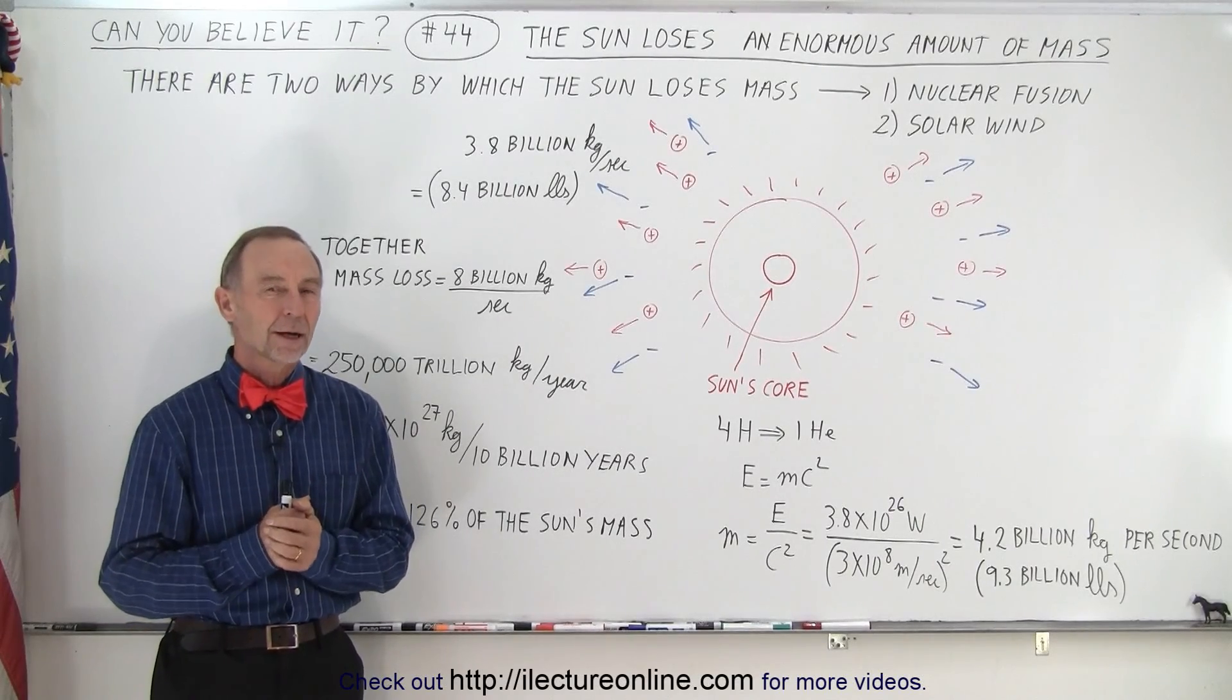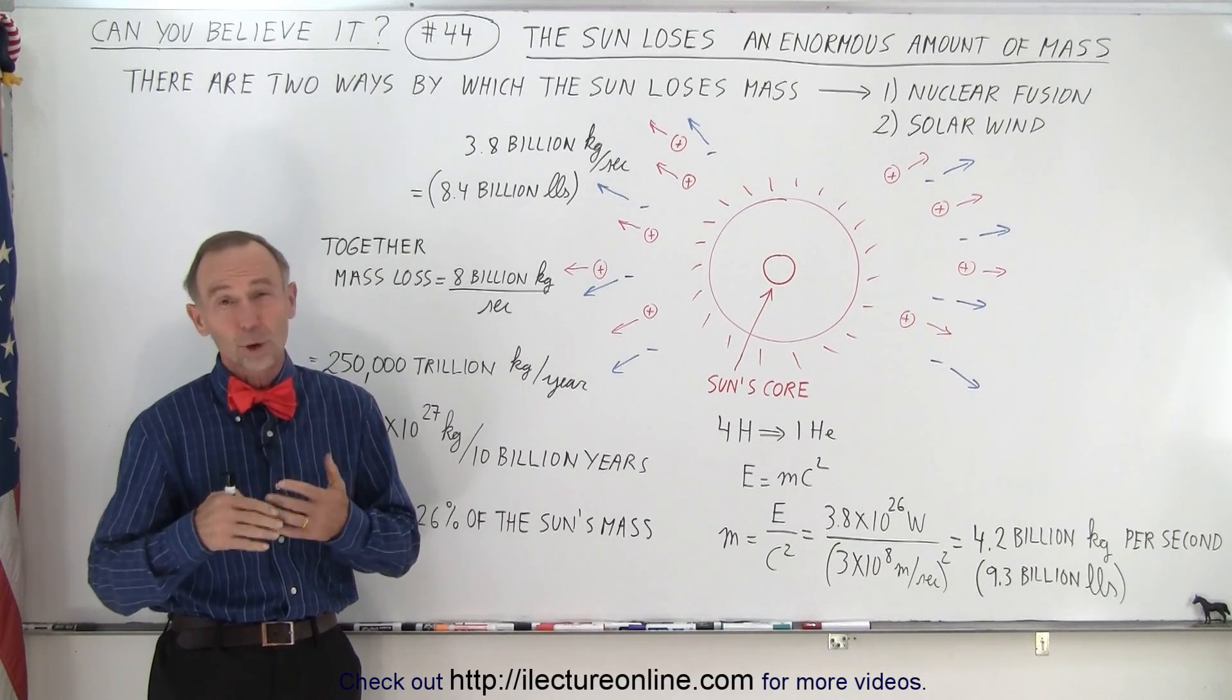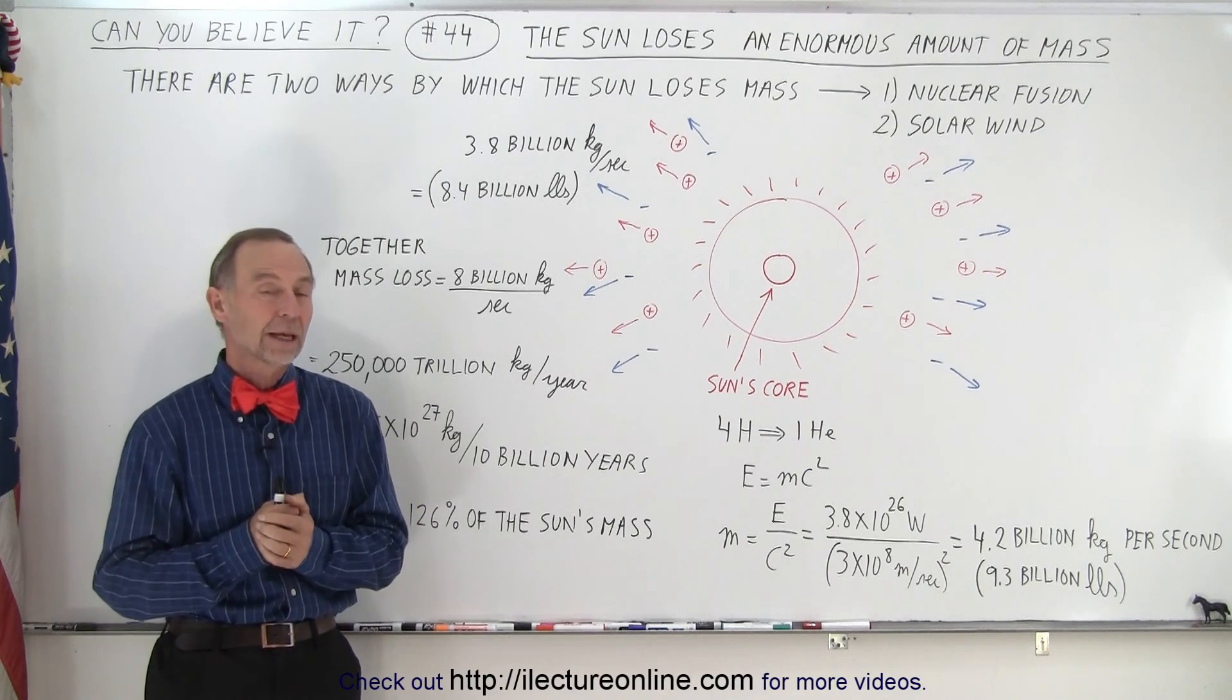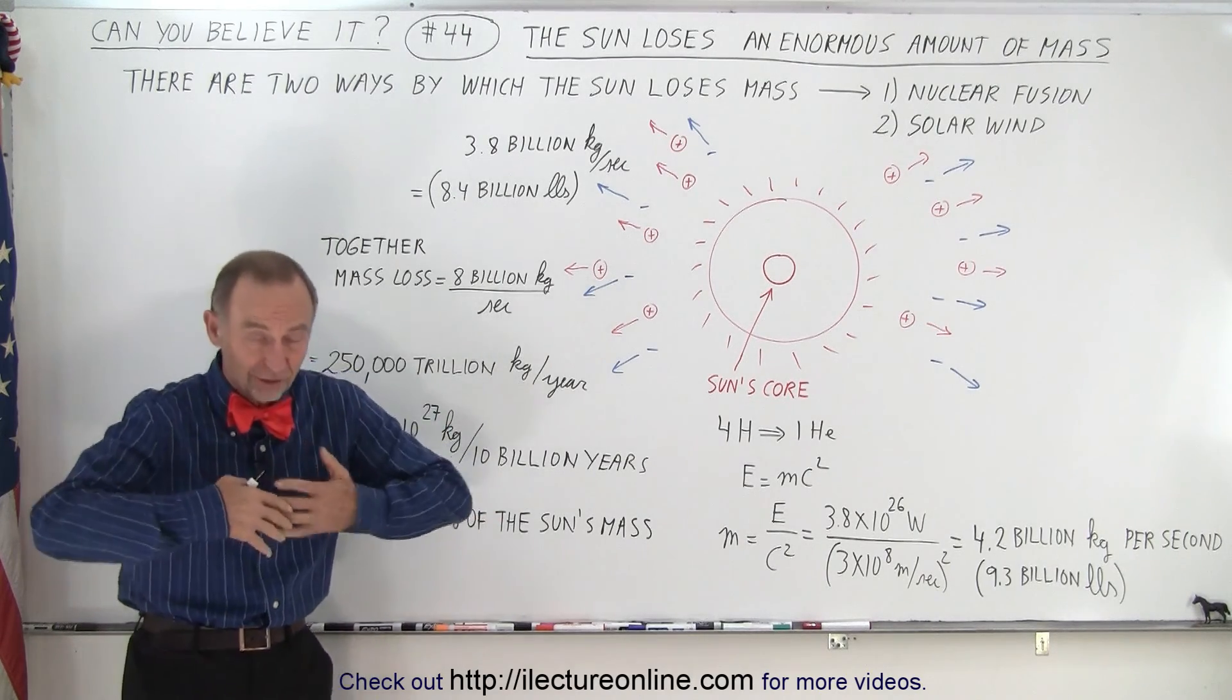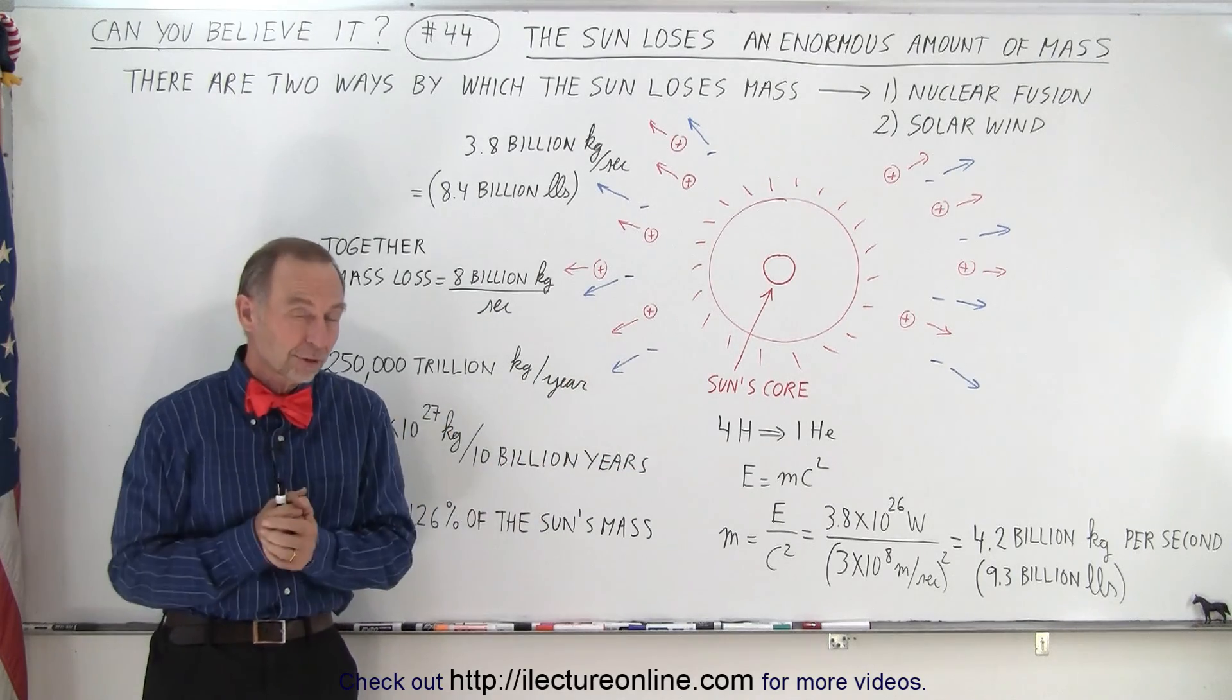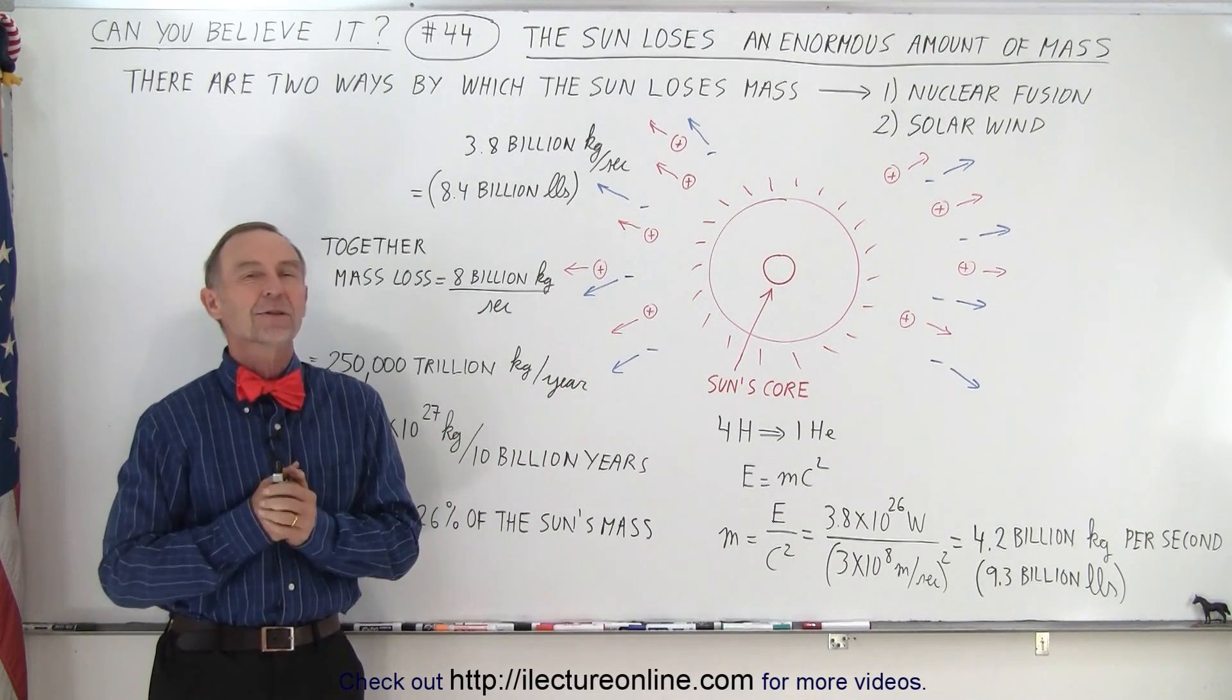Welcome to iLectureOnline. Our sun has been around for almost 5 billion years, and we expect the sun to do what it's doing today, shining its light onto the earth and the rest of the solar system, for about another 5 billion years.